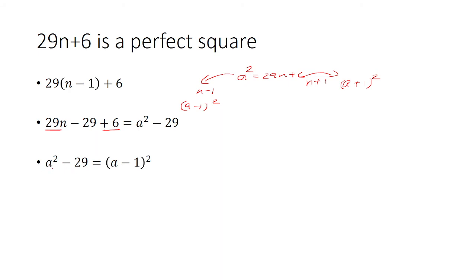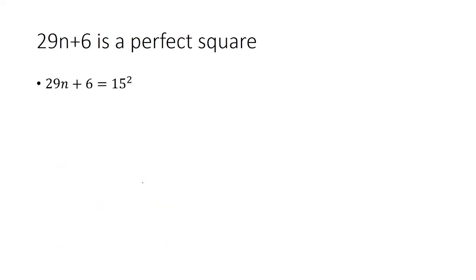Expanding (a-1)² and simplifying, we get a = 15. This means 29n + 6 = 15² = 225, so 29n = 219, which gives n ≈ 7.6. This is not an integer.